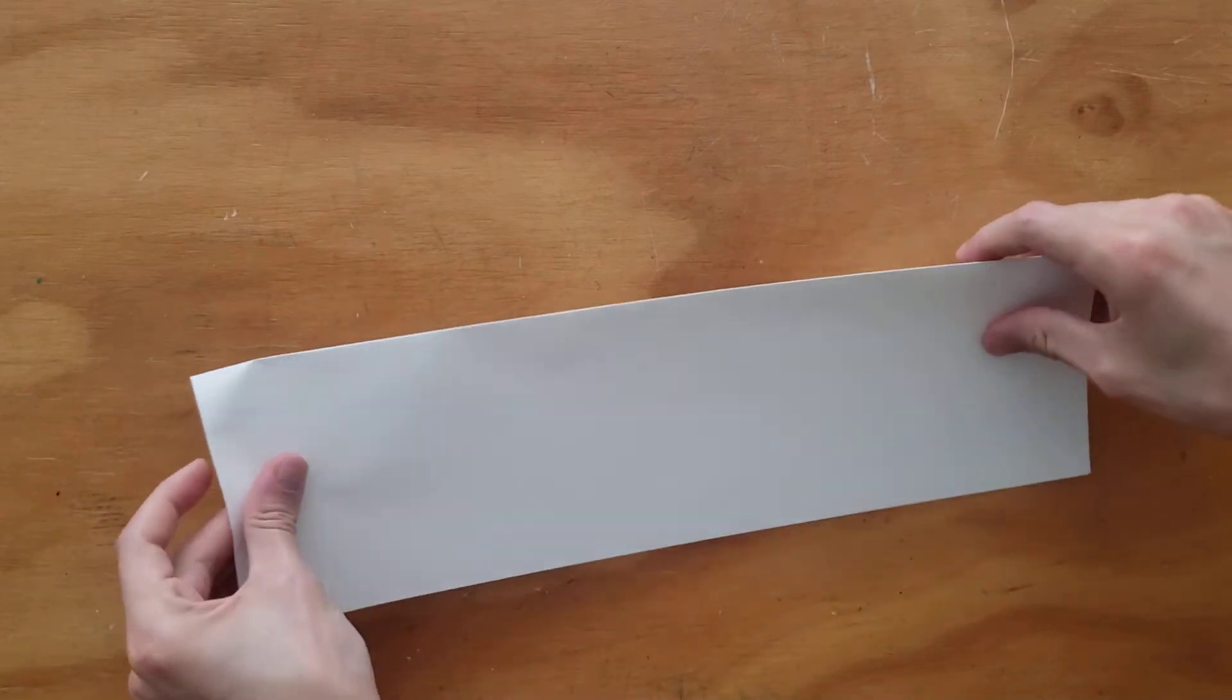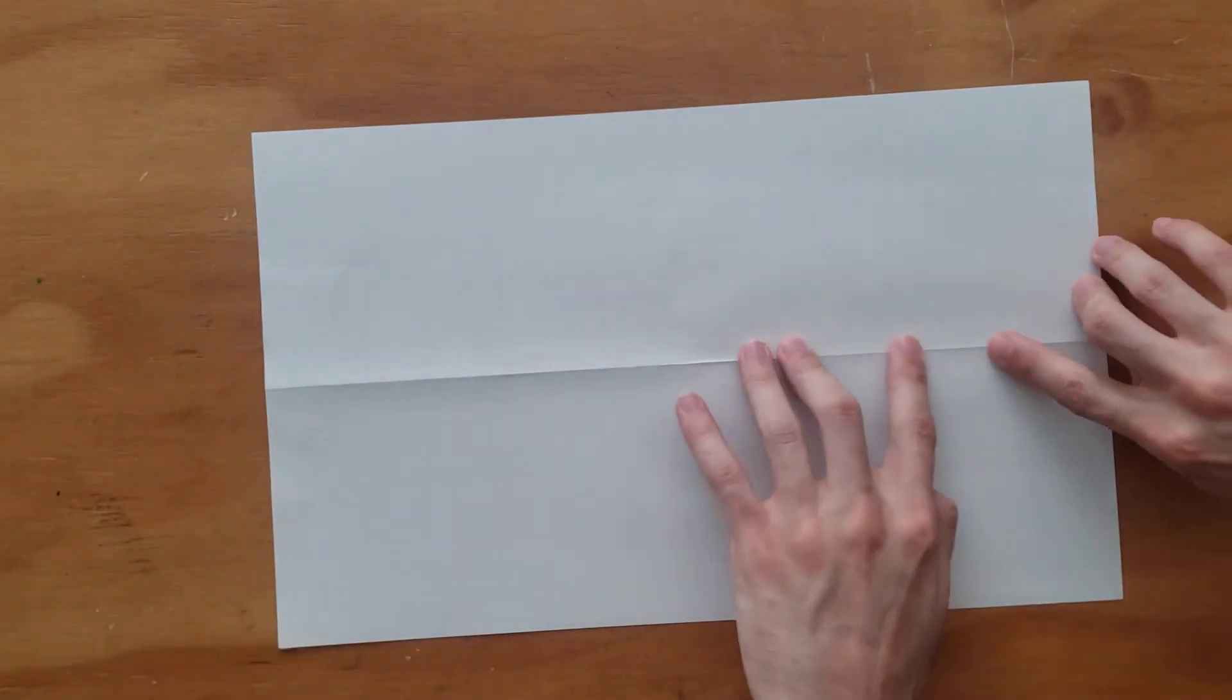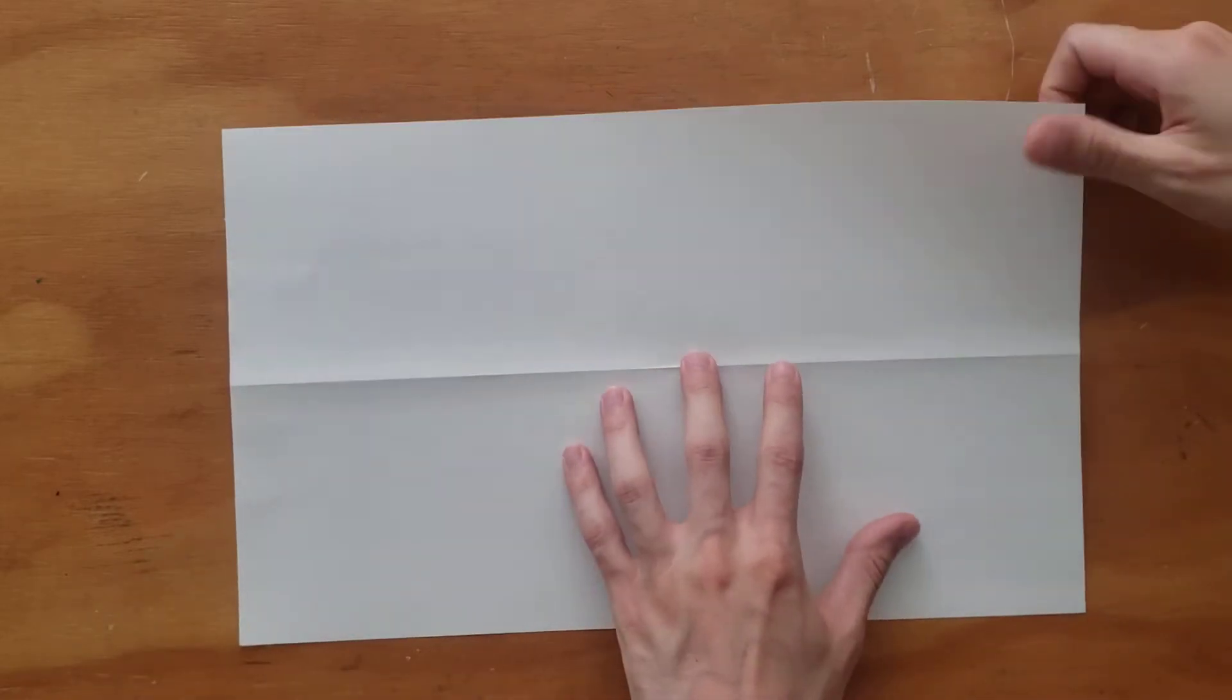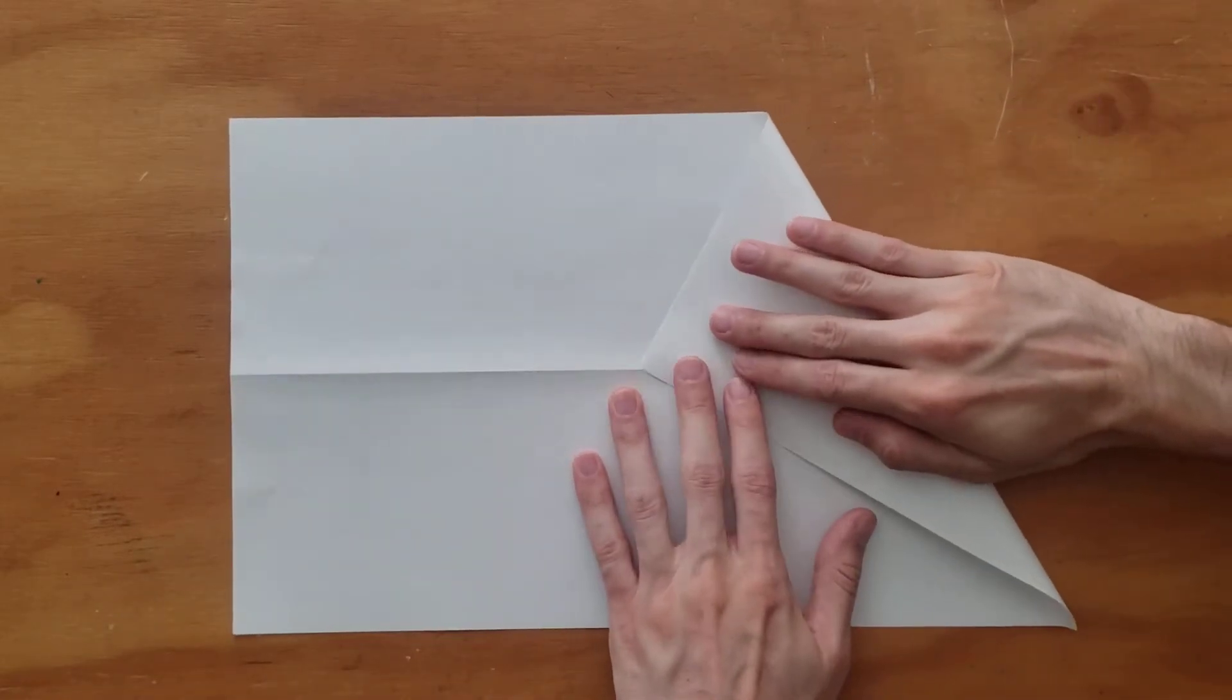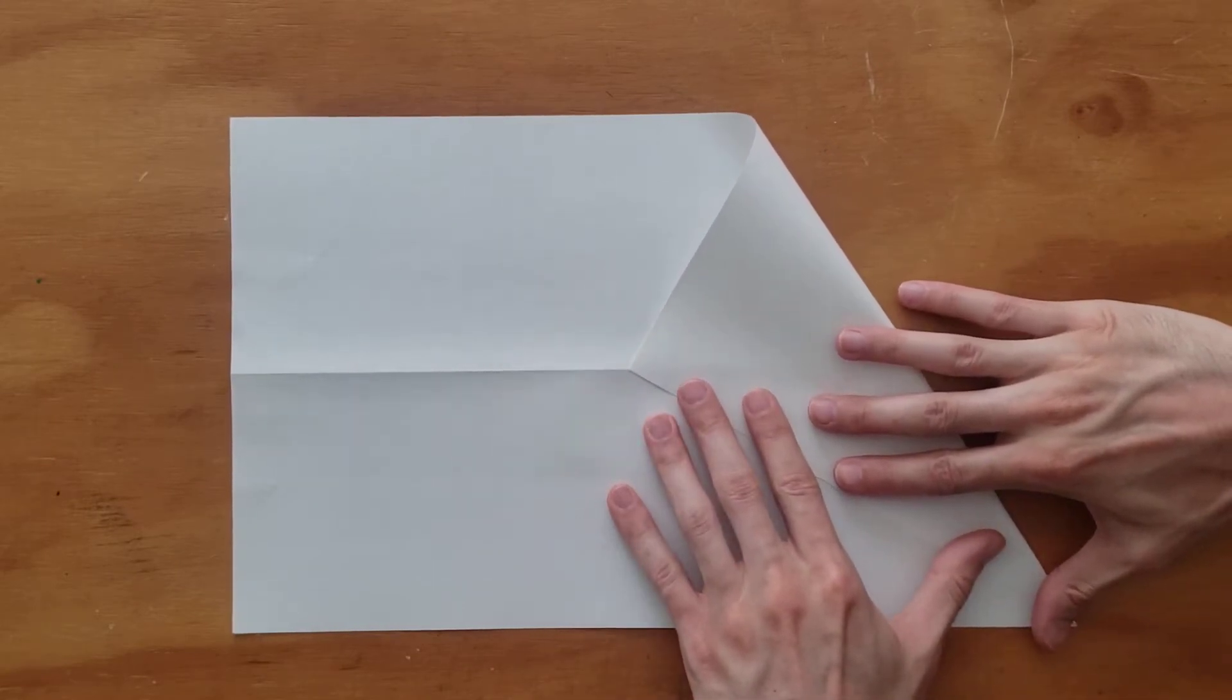So we're going to need first and foremost an equilateral triangle. So we start by having a rectangle with a piece of paper here. I fold in half.